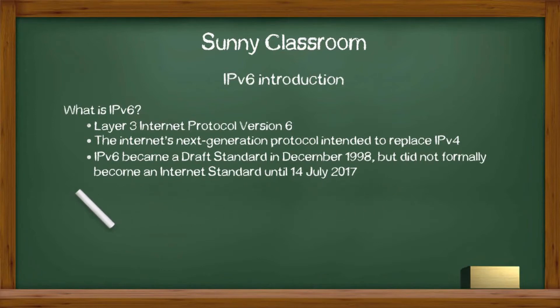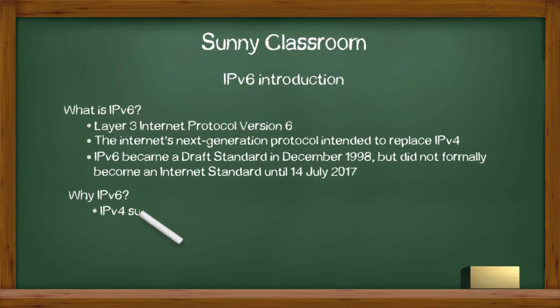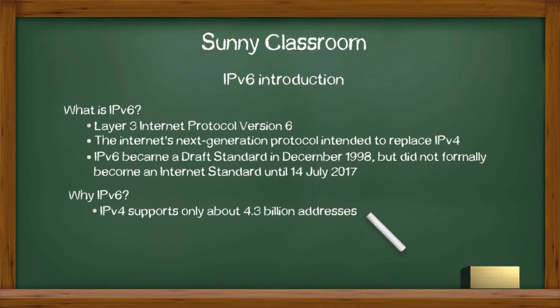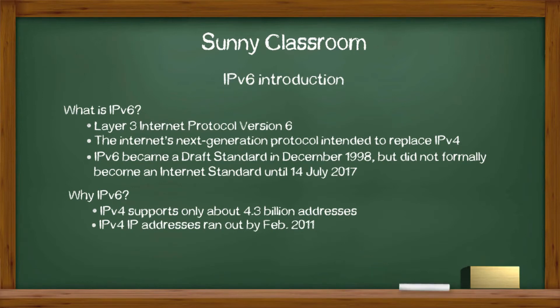Why do we need IPv6? There are many reasons, such as better security and better routing. But the main reason is IPv4 supports only about 4.3 billion addresses, which are far from enough to meet the need of the dramatic growth of the Internet. By February 2011, IPv4 public addresses were already run out. We need a newer, better, and never-run-out IP addressing scheme. IPv6 seems like a good solution.